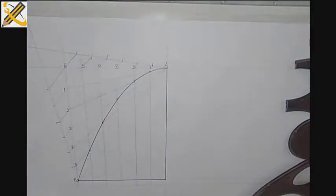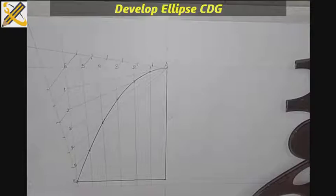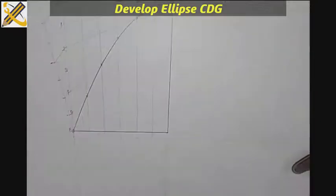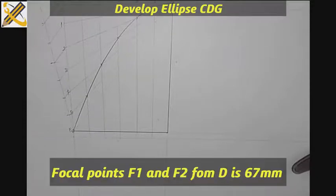So having done that, I'm going to develop the ellipse. For the ellipse, we notice that our focal point from the midpoint D, our focal point is length 67.